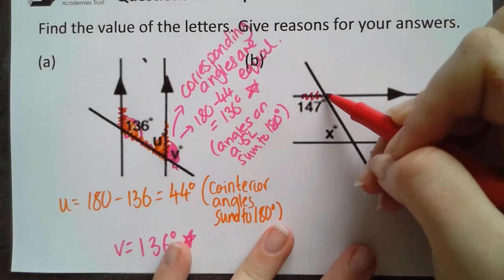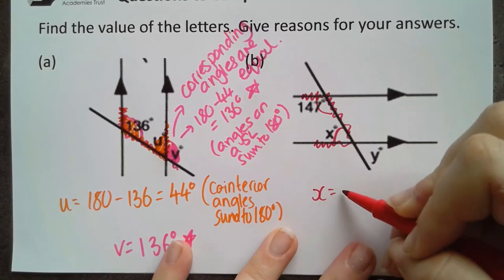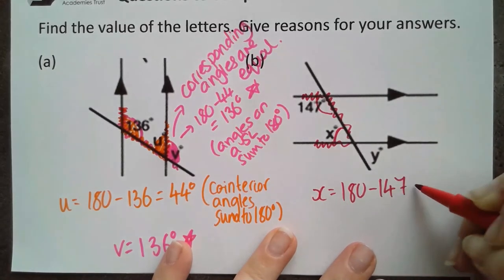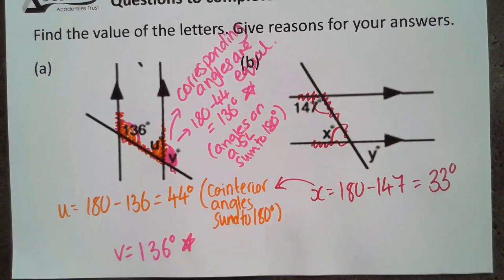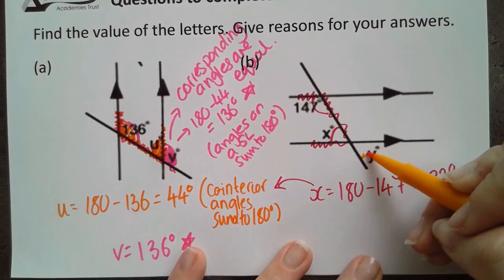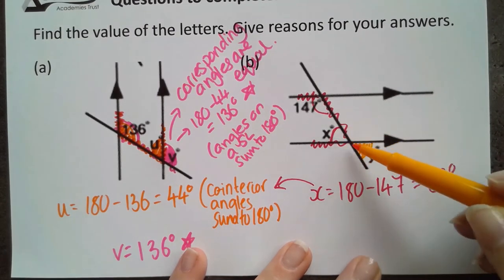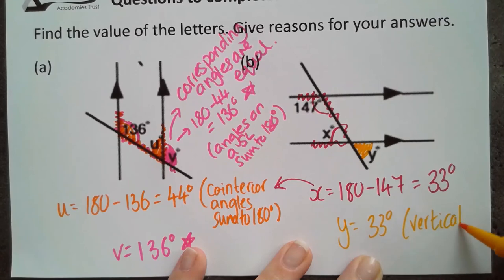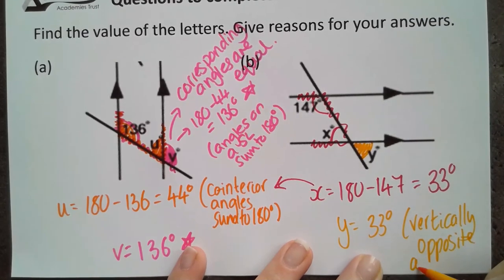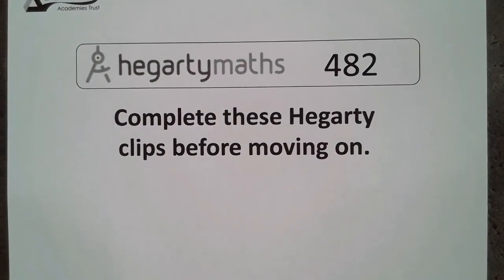The next question is very similar. Again, we've got a situation where we can use co-interior angles here. So x is 180 minus 147, so 33 degrees. Again, this is because of co-interior angles. The only difference then comes from y. There's lots of different ways we can find y, but the most efficient at this stage might be to look at vertically opposite angles here. So y is also 33 degrees because it's vertically opposite, and they're equal.